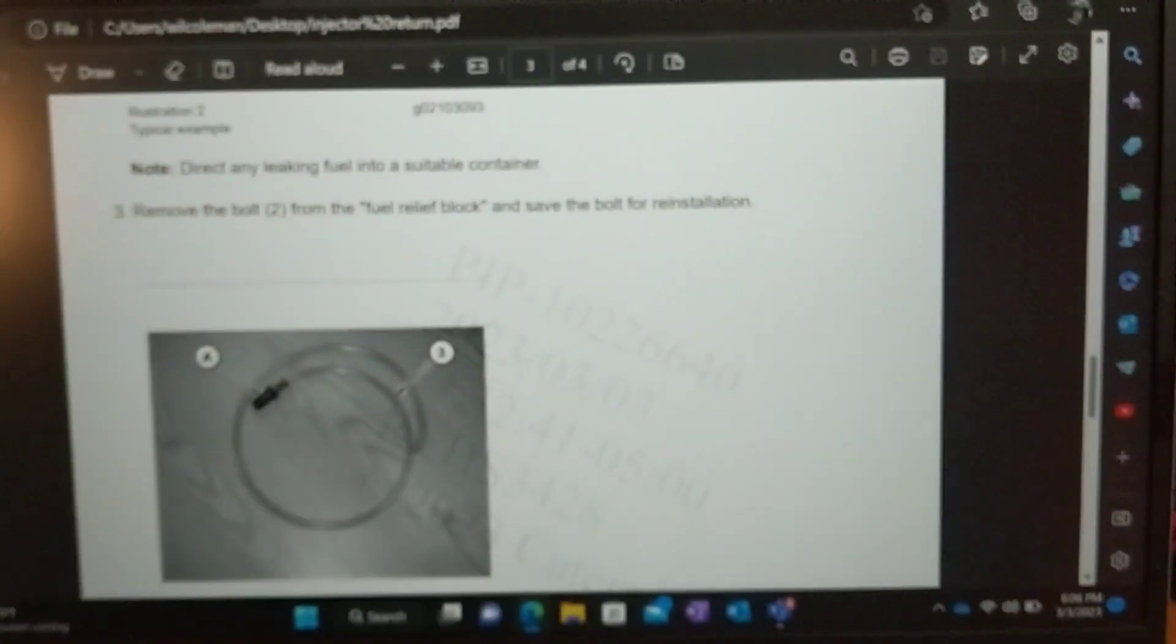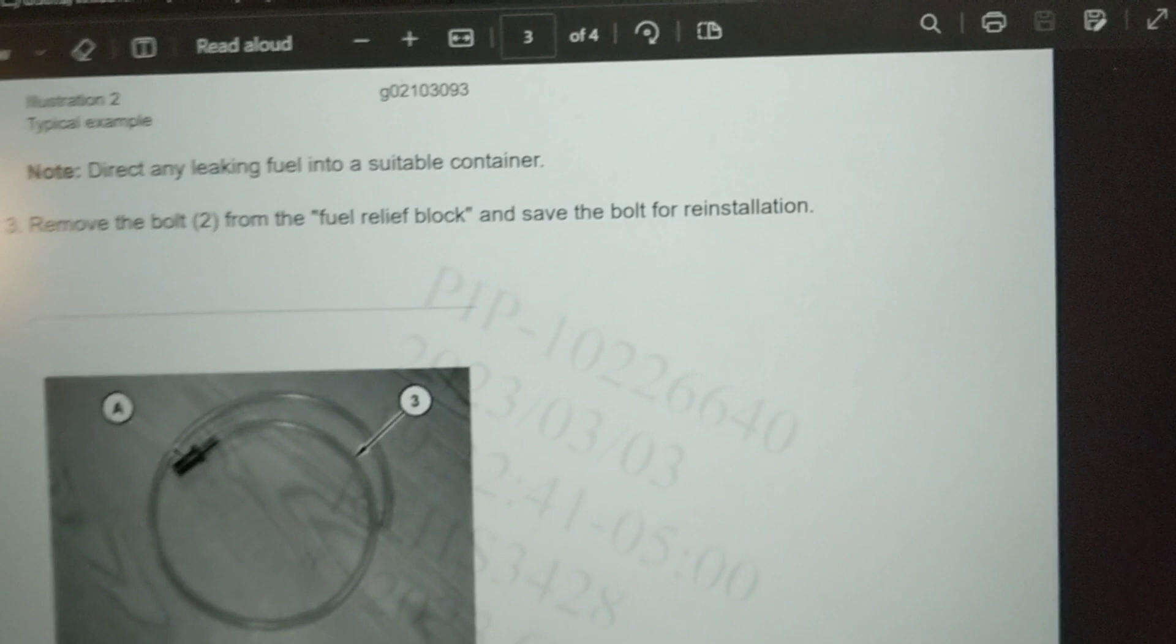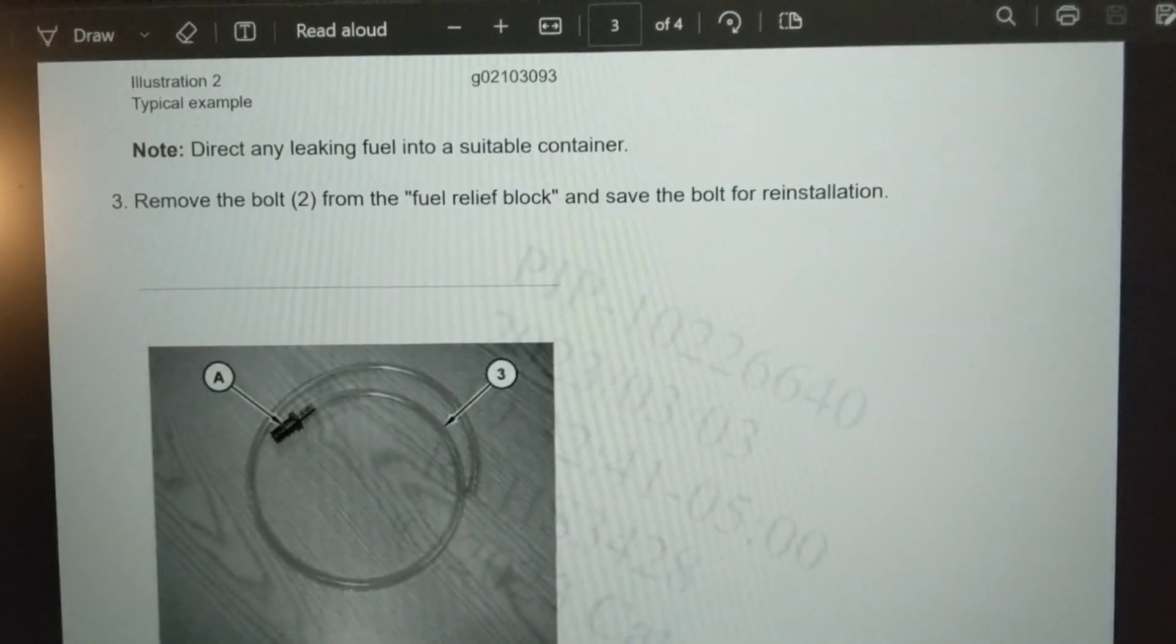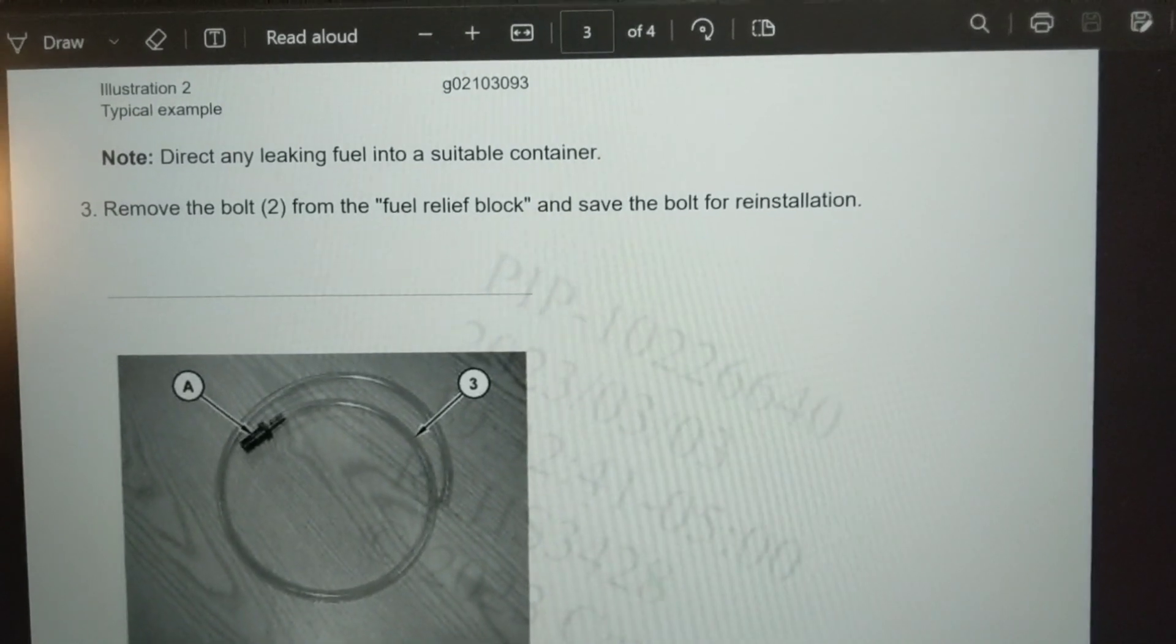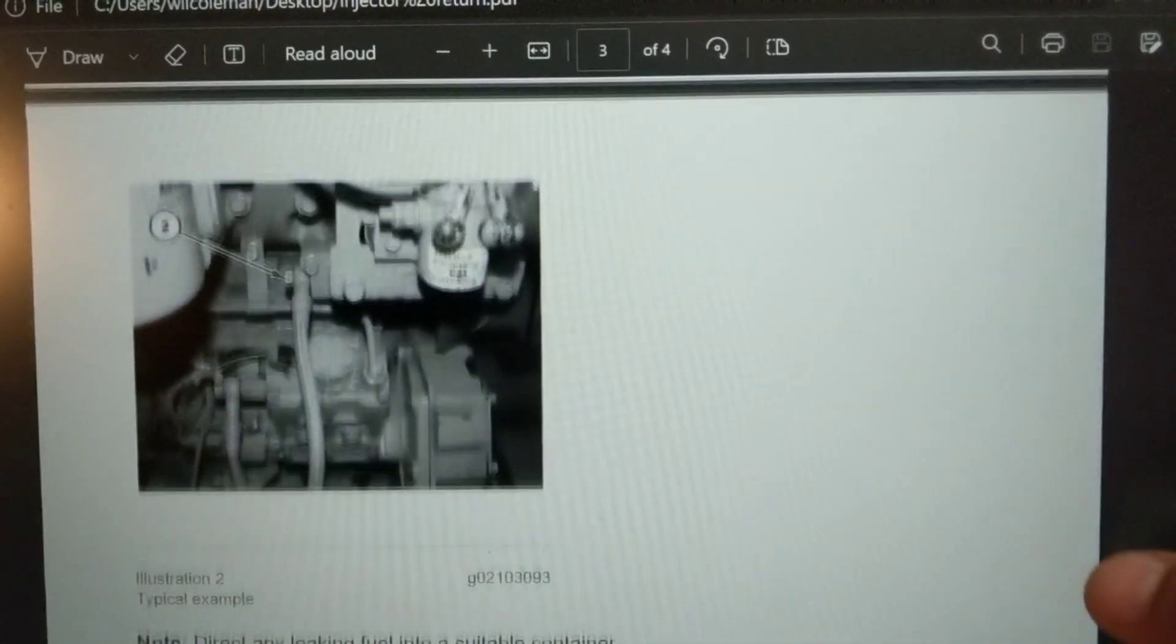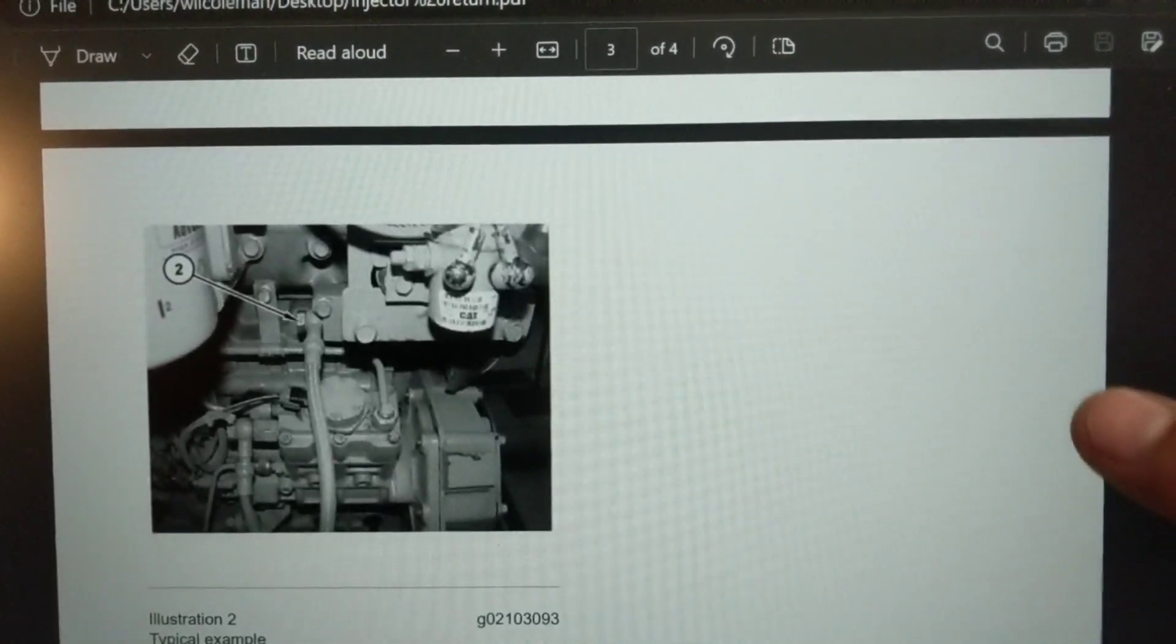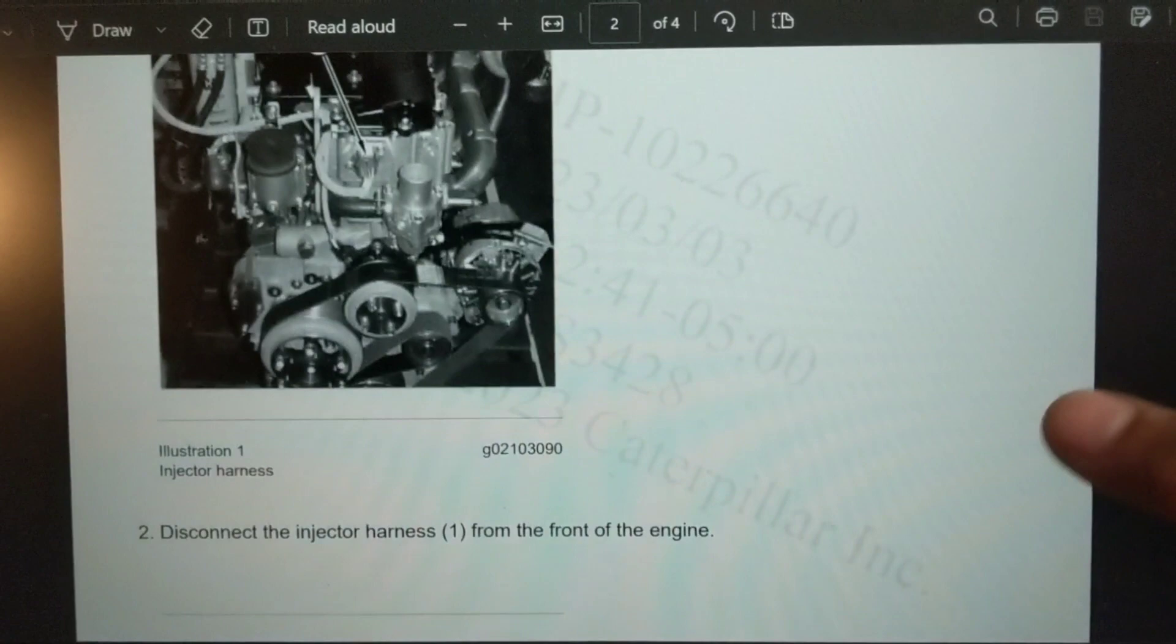What you could do is take a banjo bolt and just drill and tap the end of it and just thread in a barb fitting. The banjo bolt on this Caterpillar here is an M14 by 1.25 if you're interested and need to know that.